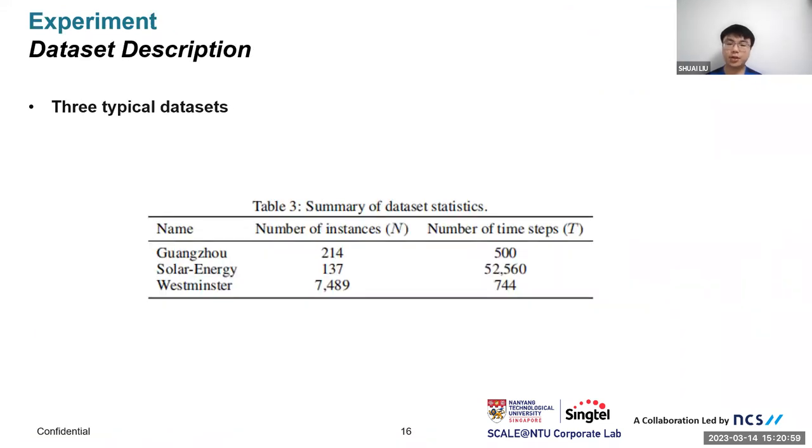After the methodology part, we go to the data description. Here we use three typical datasets. The Guangzhou dataset is traffic data where the number of instances N and timestamps T are both small, so every model can fit. The solar energy dataset has a very large T. The Westminster dataset has a very large number of instances. Since this is multivariate time series data, we discard spatial correlations in Westminster dataset.